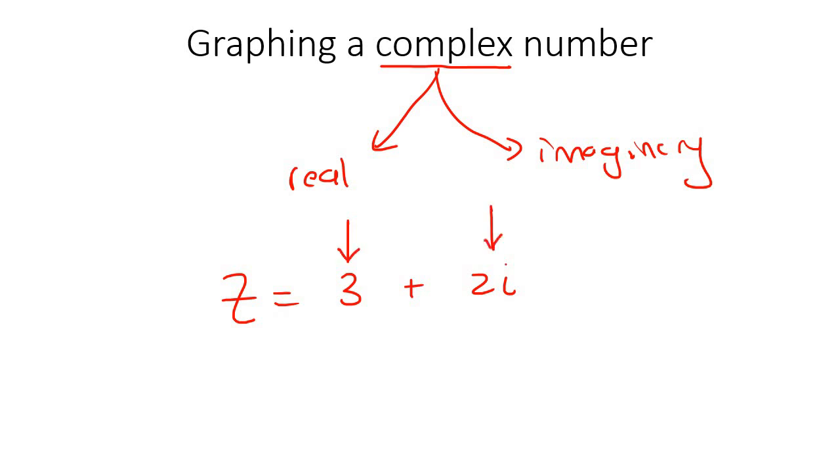So recently, we started looking at complex numbers, and we said that complex numbers are combinations of real numbers and imaginary numbers. So for example, if I say z is equal to 3 plus 2i, then this is the real part, and this is the imaginary part, because that's what the i stands for.